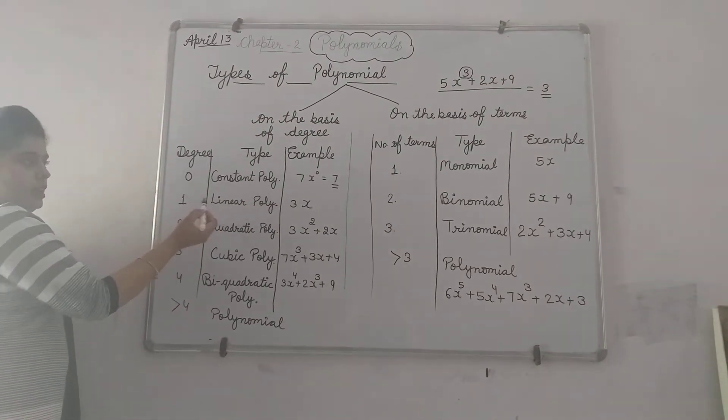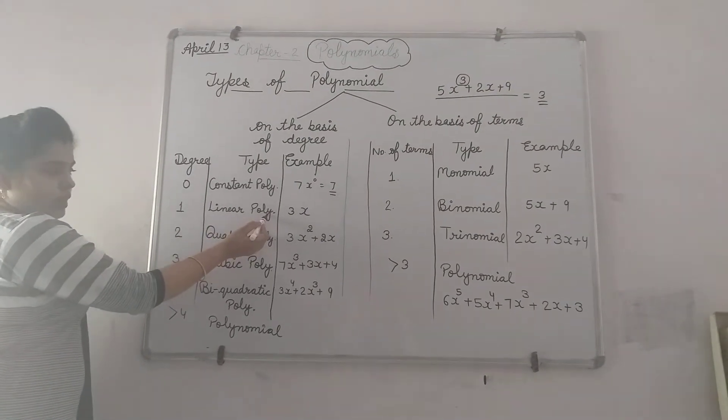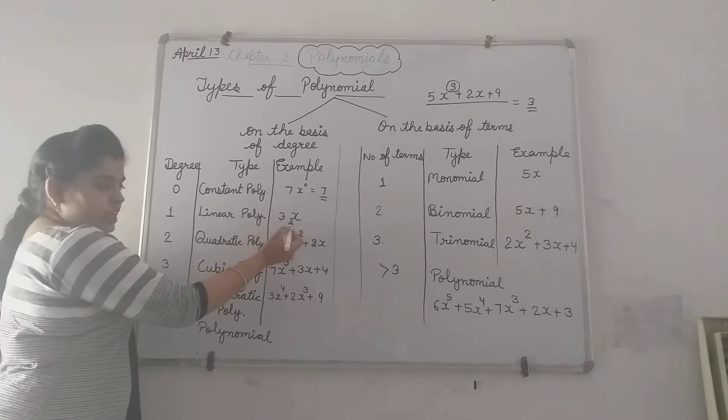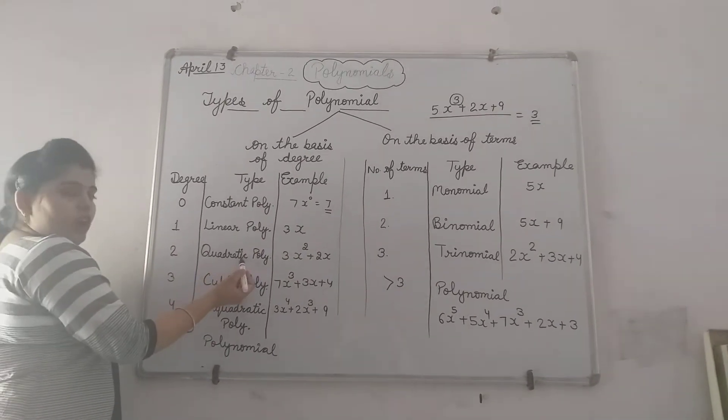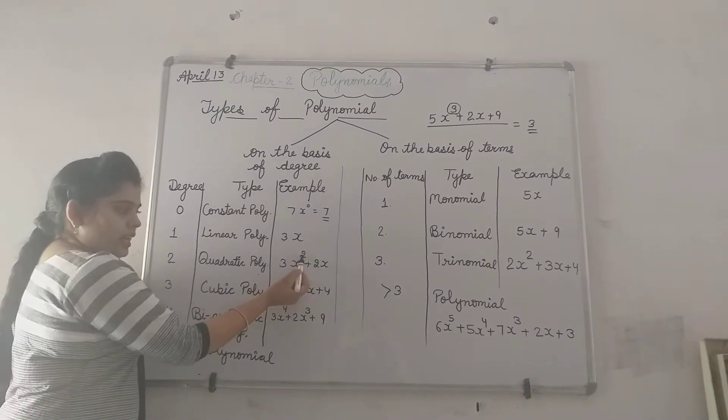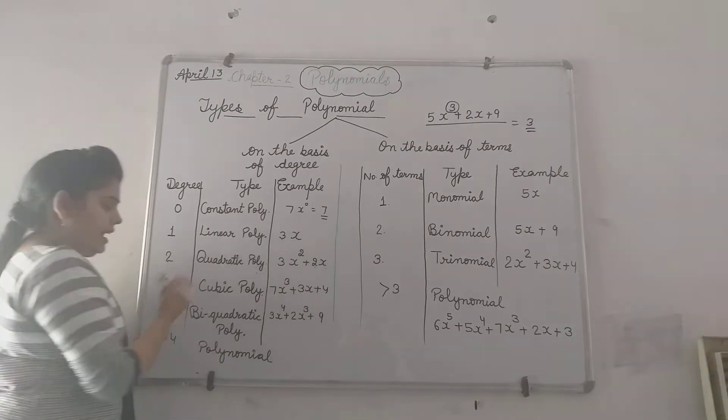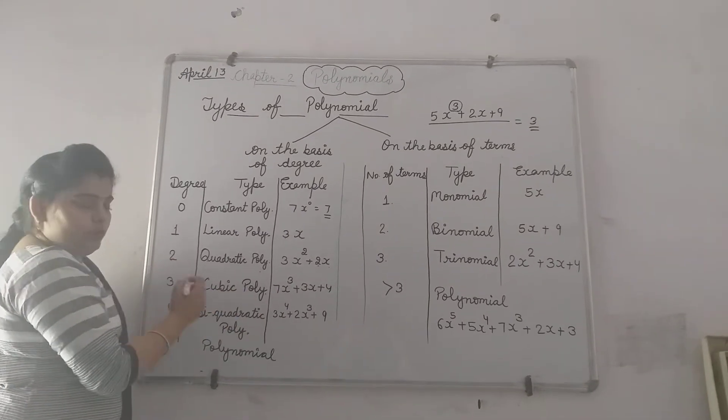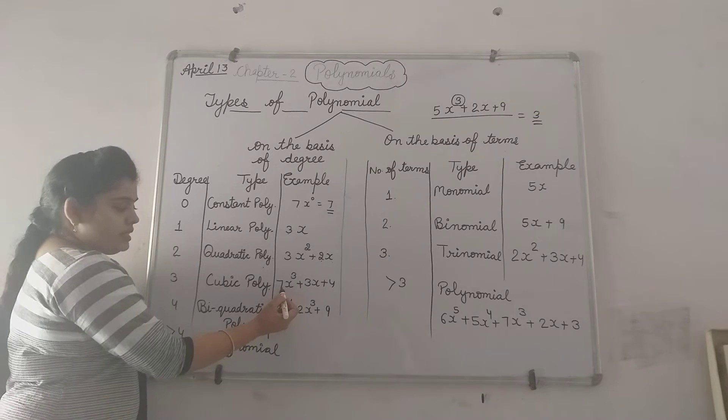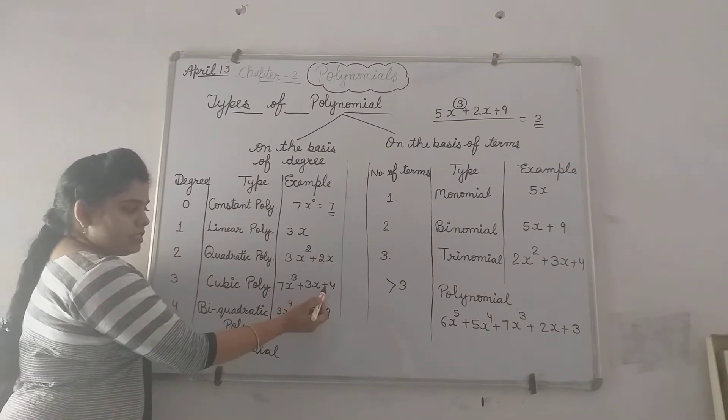If degree is 1 then it is linear polynomial, example 3x. If degree is 2 then it will be quadratic polynomial, example 3x square plus 2x. If degree is 3 then it will be cubic polynomial, example 7x cube plus 3x plus 4.